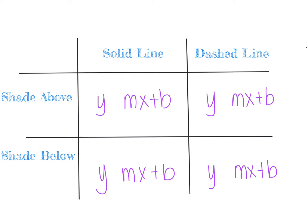When thinking about a solid or dashed line, and shading above or below, the inequality symbol tells us which to use. Shading above implies greater than, so y > mx + b. Shading below means less than, so y < mx + b. The shading direction comes from the direction of the inequality sign.